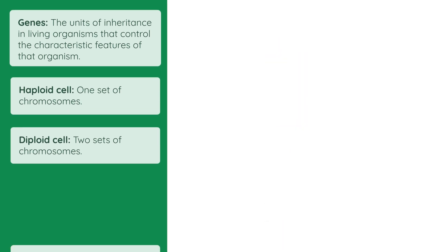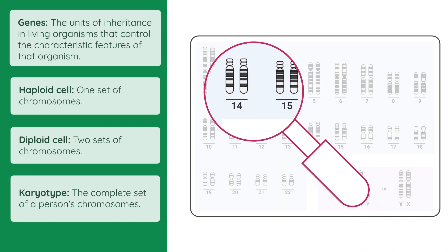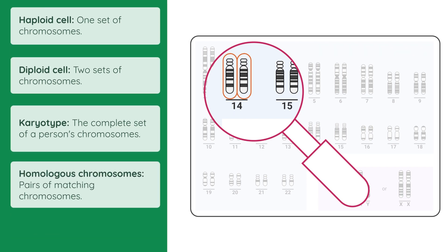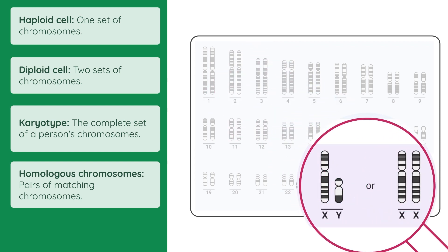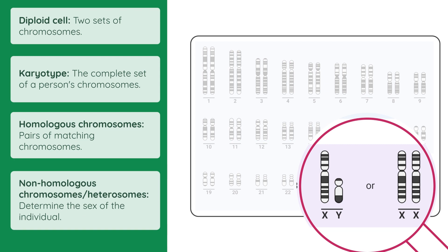A karyotype is simply a picture of a complete set of a person's chromosomes. If you notice in this karyotype here, all of the chromosomes are arranged in pairs. These pairs of matching chromosomes are called homologous chromosomes. In diploid cells, one chromosome from the homologous pair comes from the mother and the other comes from the father. If you look carefully at the last two chromosomes marked X and Y, they are different to the others. These non-homologous chromosomes, or heterosomes, determine the sex of the individual.